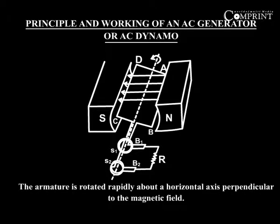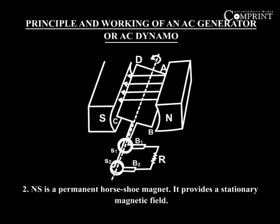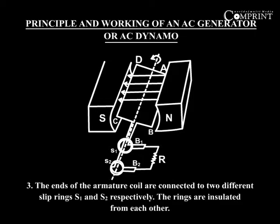The armature is rotated rapidly about a horizontal axis perpendicular to the magnetic field. NS is a permanent horseshoe magnet which provides a stationary magnetic field. The ends of the armature coil are connected to two different slip rings S1 and S2 respectively.